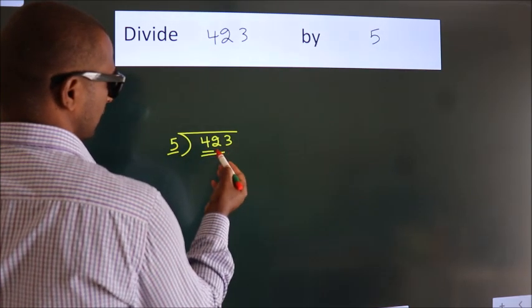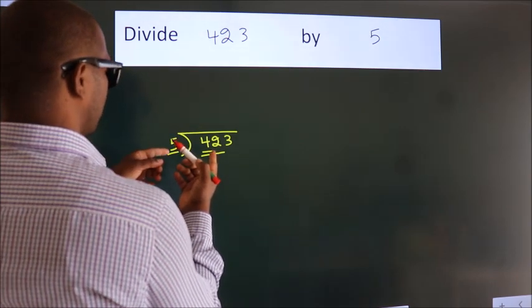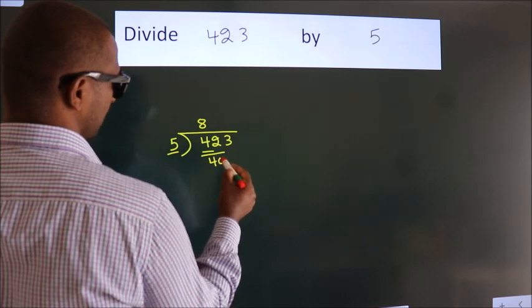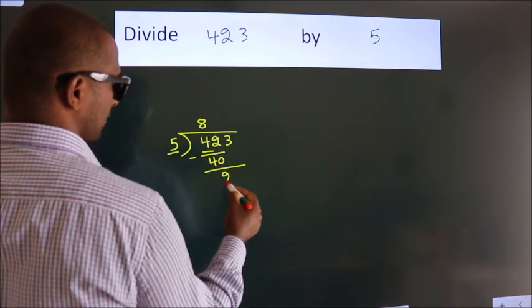So we should take 2 numbers, 42. A number close to 42 in 5 table is 5 eights 40. Now we should subtract. We get 2.